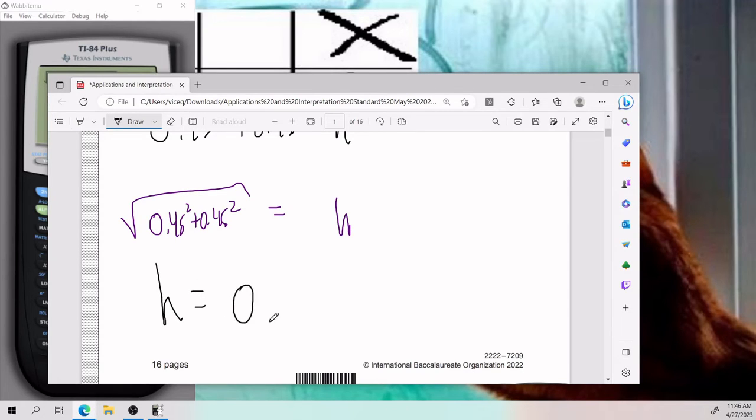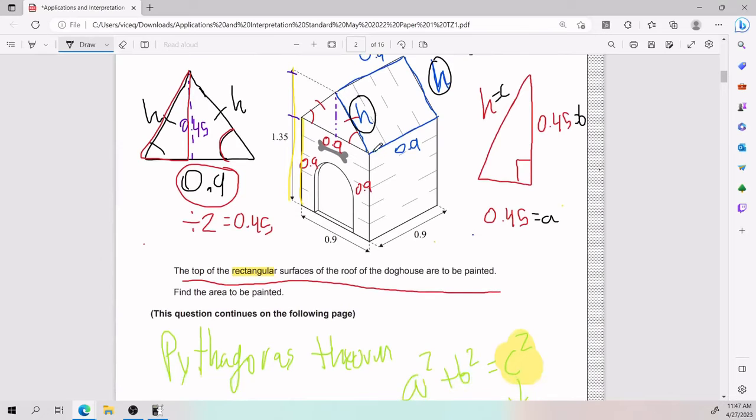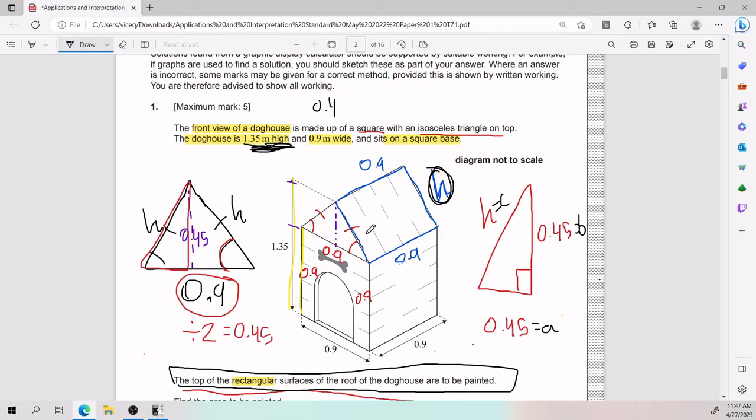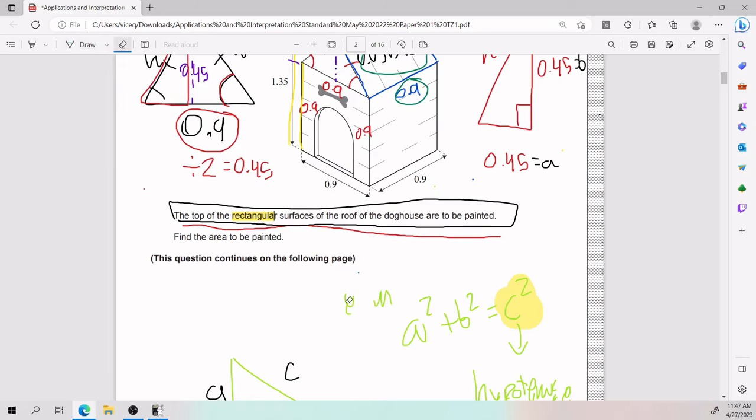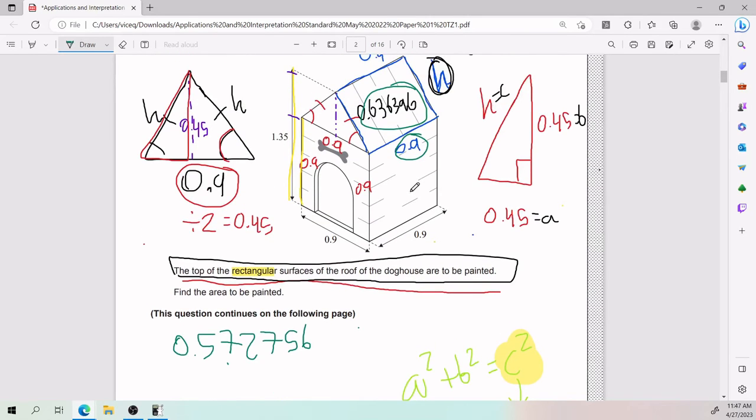All right, and that right there is the slant height. This is h here. So now, the top of the rectangular surface of the roof of the doghouse to be painted. Well, I know how my rectangle looks like now. This h here is going to be 0.636396. How do you find the area of a rectangle? Base times height. So I'm going to do this guy times this guy. 0.5727. And so for this first one, you're going to write down, the area of my rectangle is 0.5727. And I always like to put all the numbers because it's better. You want to put your answer in the correct units. So you think of the units. We have meters. So we put meters.